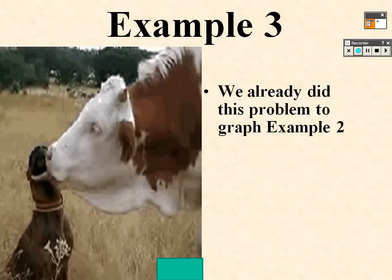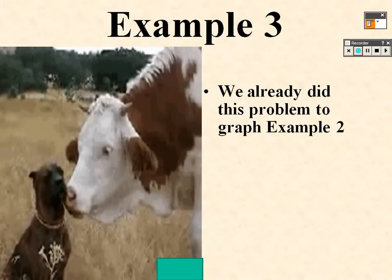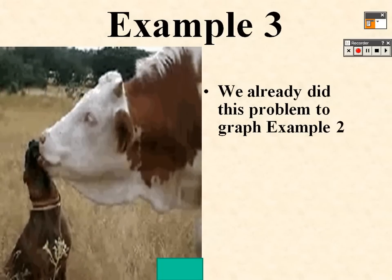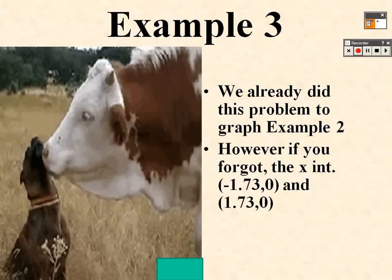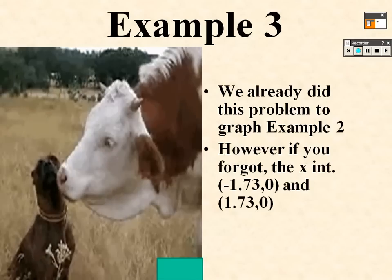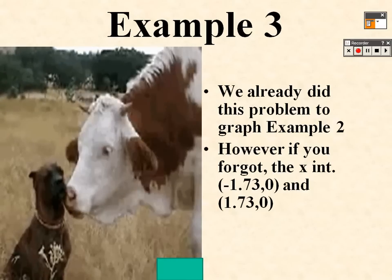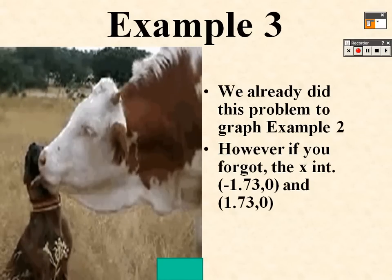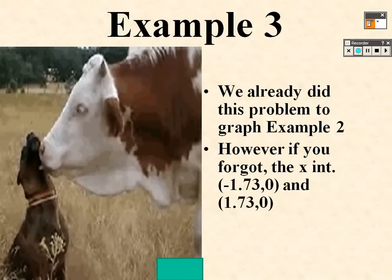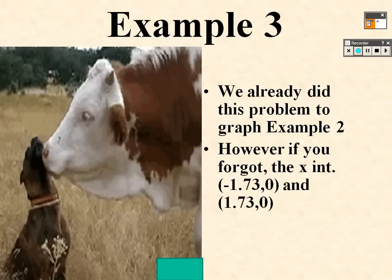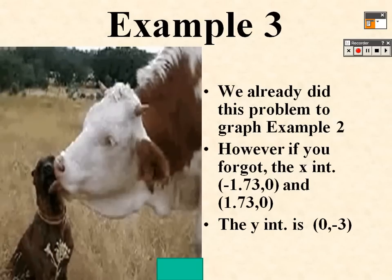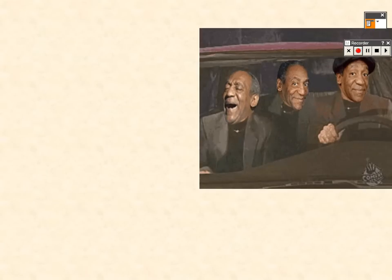Example three is the same problem we just did. As a reminder, the x-intercepts were -1.73 and 1.73, and the y-intercept was (0, -3), just in case you didn't write those down.